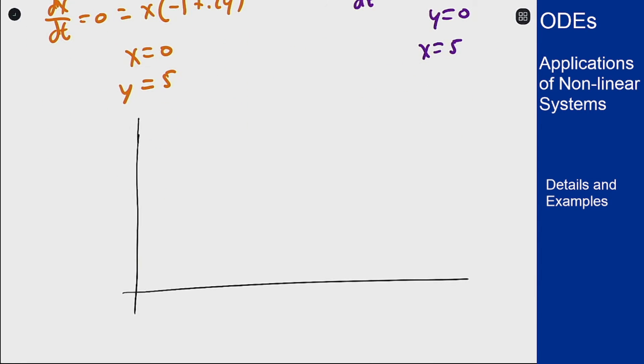So we have our plane here. We have our orange nullclines which are x equals zero, which is the y-axis, and y equals 5, a horizontal line around there.